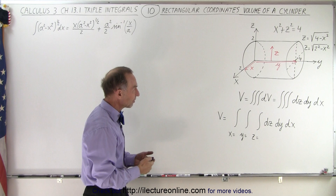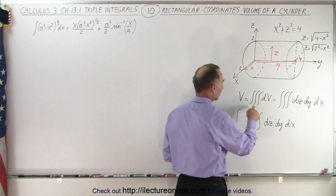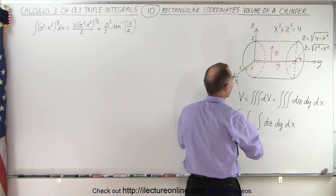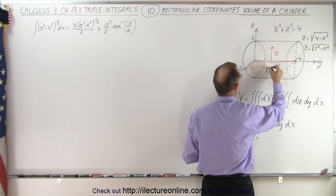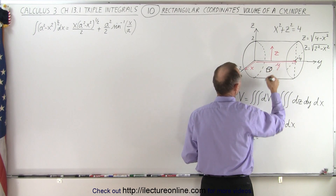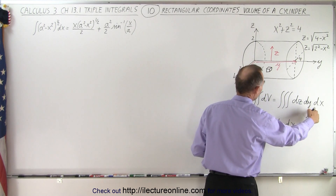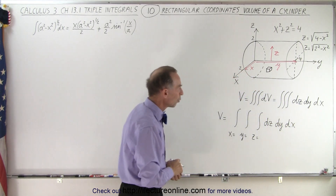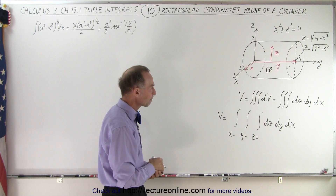We're trying to find the volume, so the volume is going to be the triple integral of dV. dV is a small volume element that is cubic in shape, so dV will be dz dy dx. We're going to use that order: starting with z, then y, then x integration.